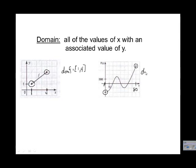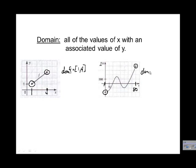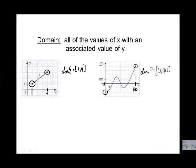To write it out, we'll put DOM for domain. Looking at the top, they're actually calling this function p, so I'll put DOM of p instead of f — no big difference though. Our lowest value is 0, highest value is 80, and square brackets around those to show it's an interval and not a point.